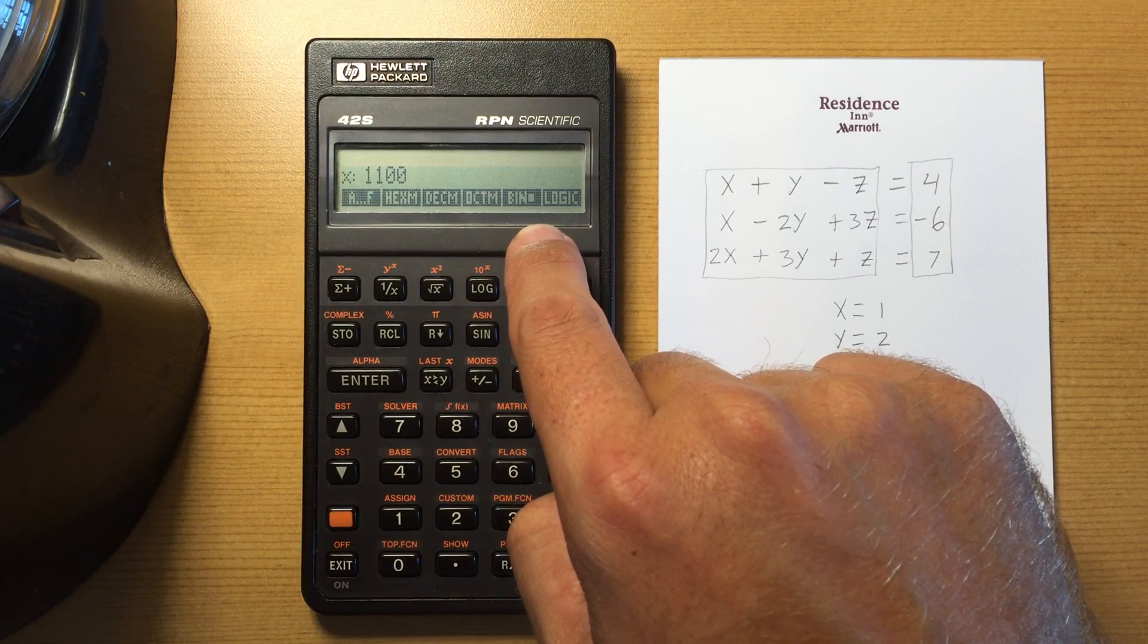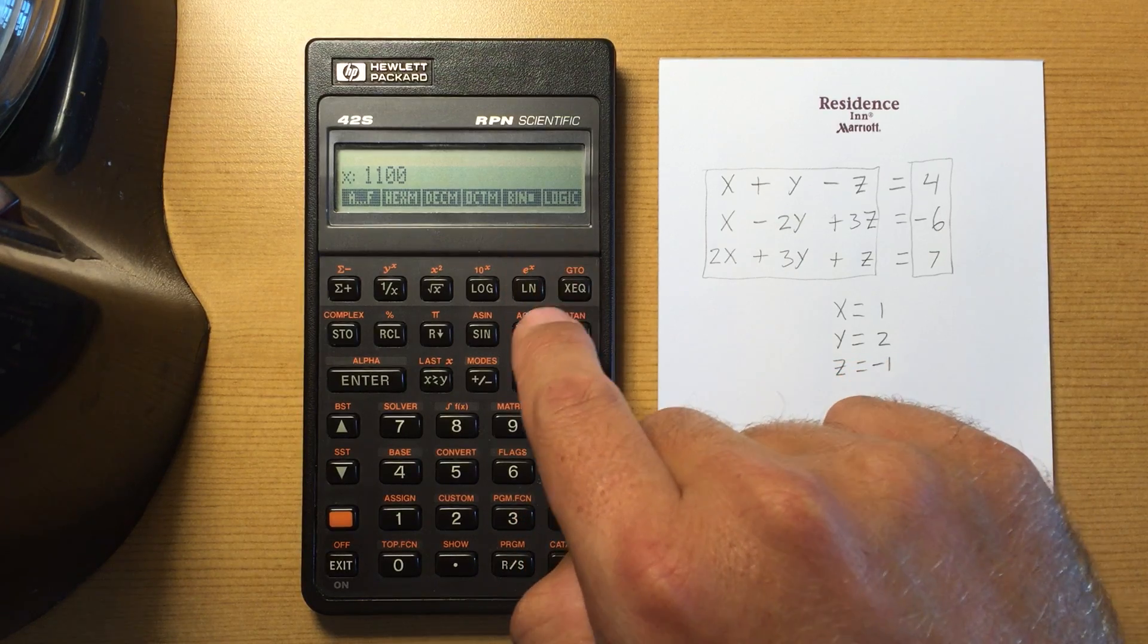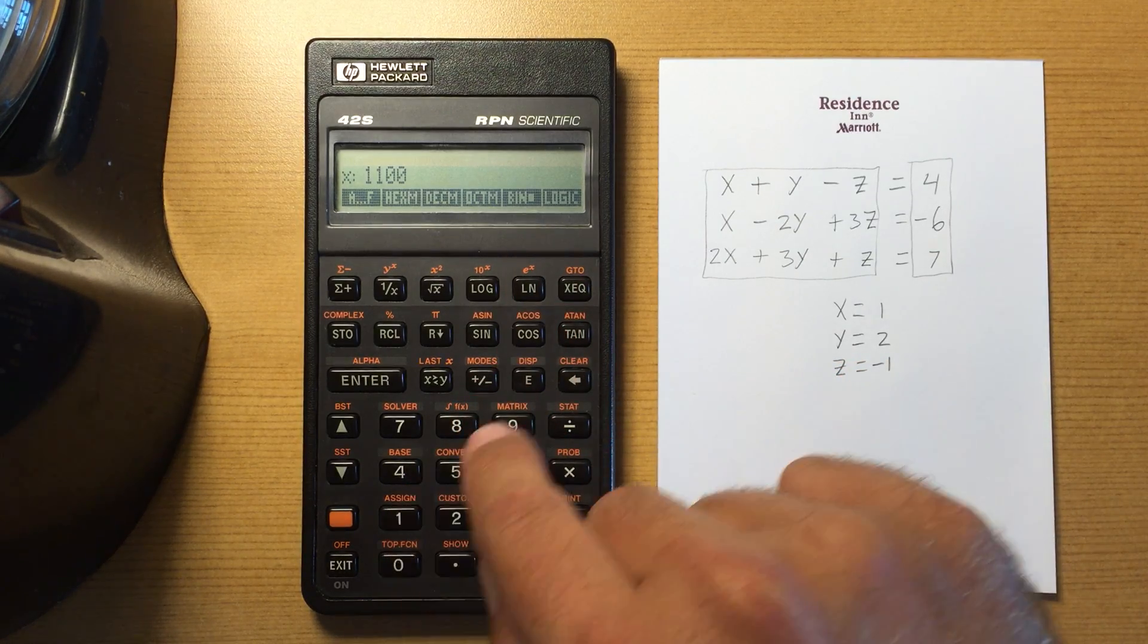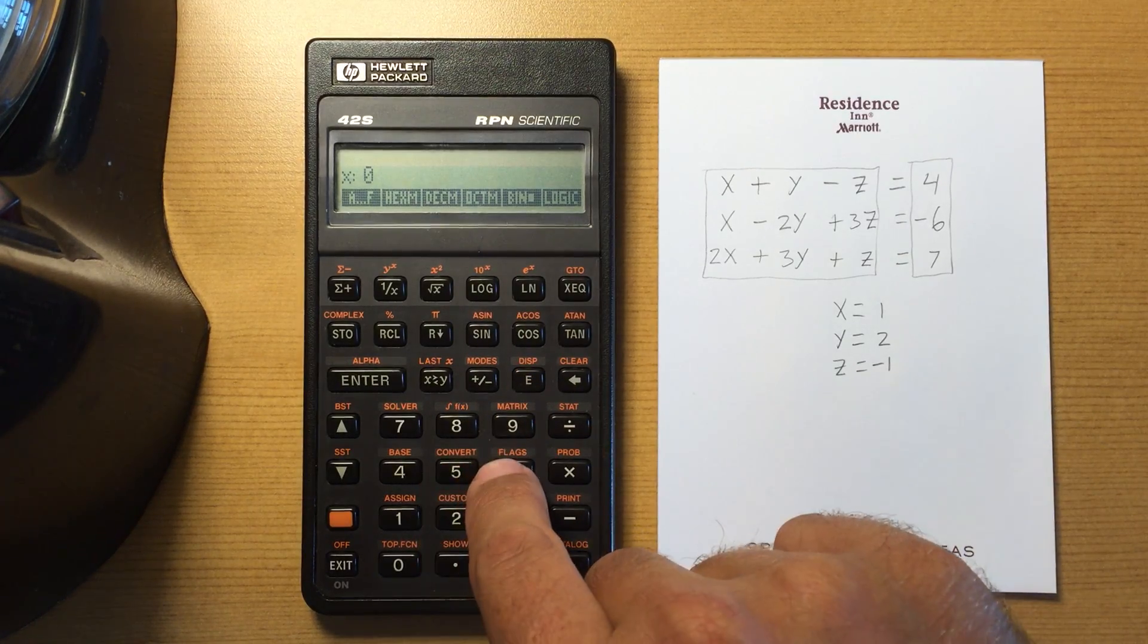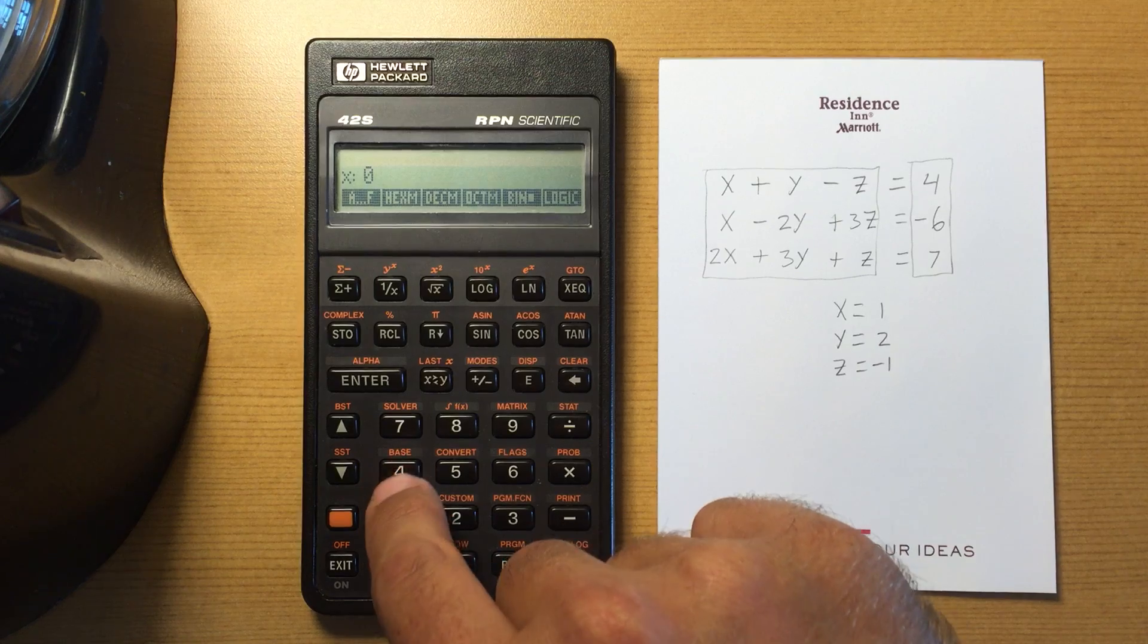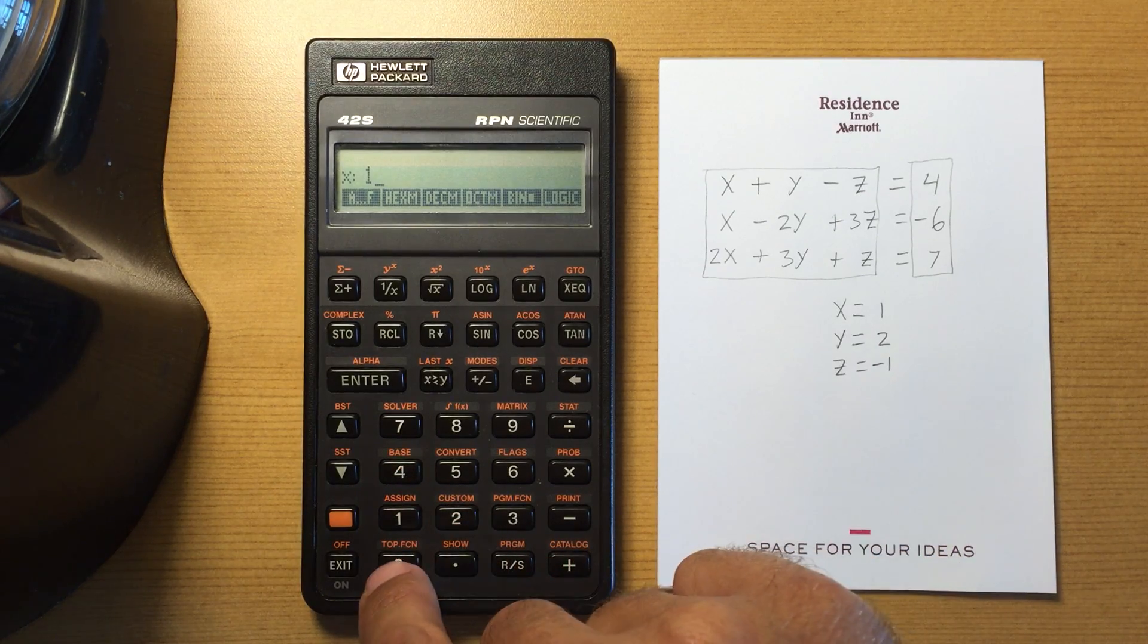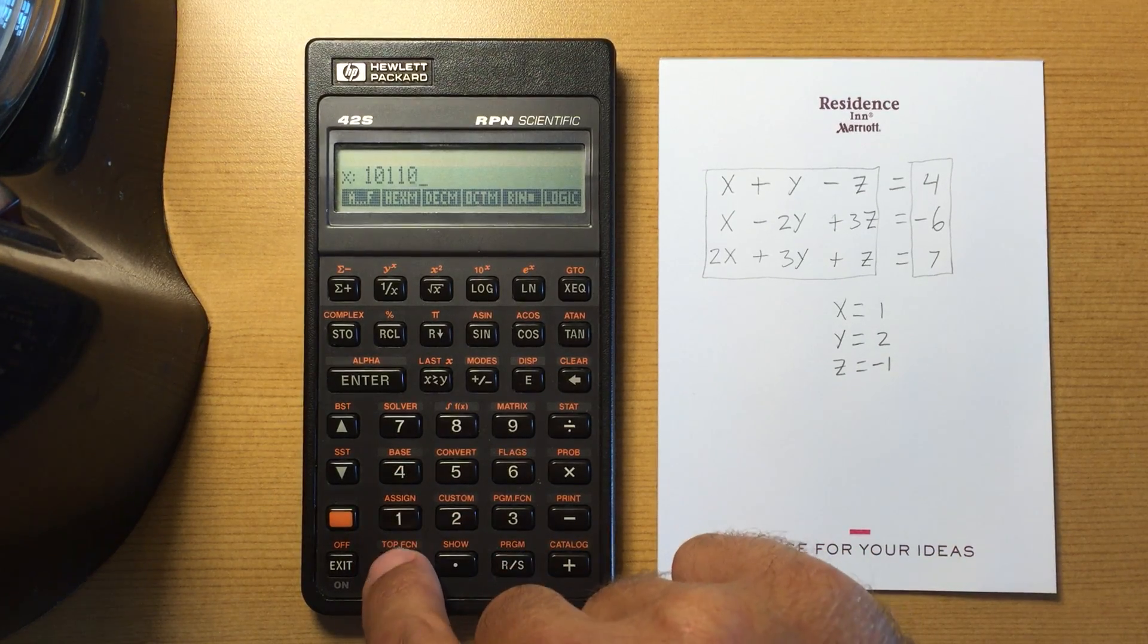Now if I wanted to enter in a binary number, right now I'm in binary mode, so I'll clear that. If I enter in any number but a 1 or a 0, nothing happens. If I enter in those numbers...